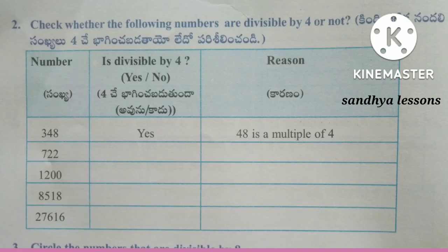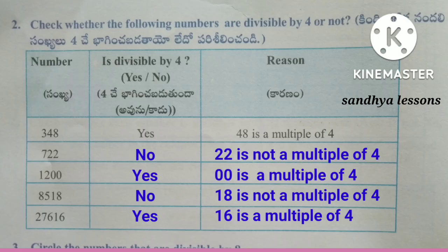Second Roman: Check whether the following numbers are divisible by 4 or not. 348 is divisible by 4. 722 — 22 is not a multiple of 4, so it is not divisible by 4. 8,518 — 18 is not a multiple of 4, so it is not divisible by 4. 27,616 — 16 is a multiple of 4, so it is divisible by 4.